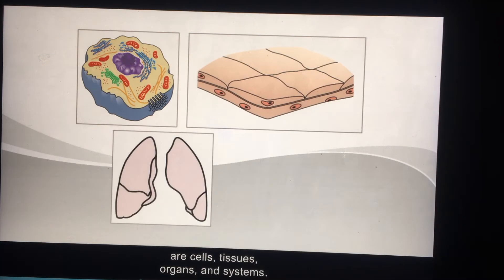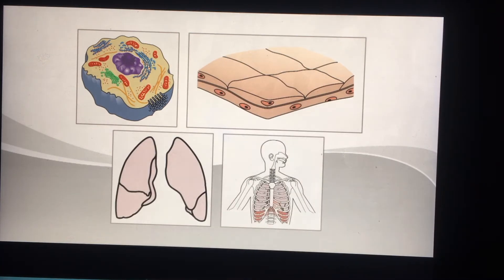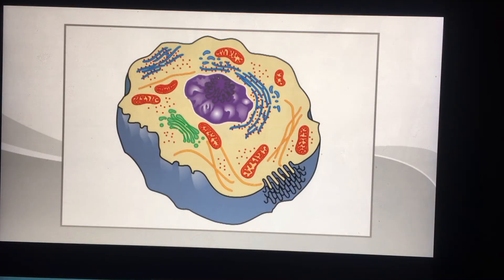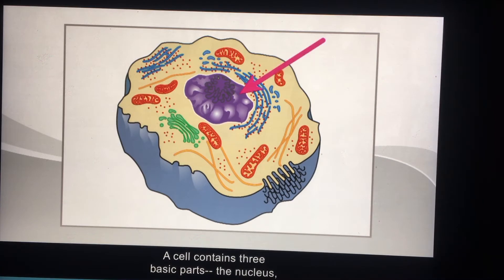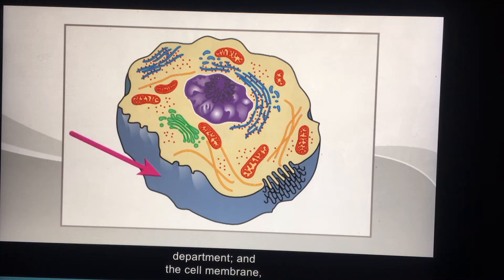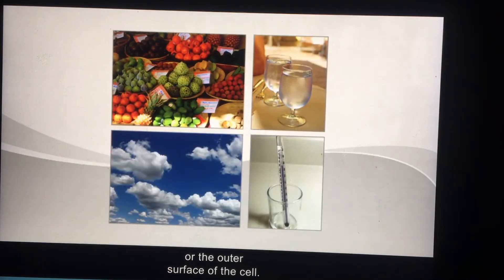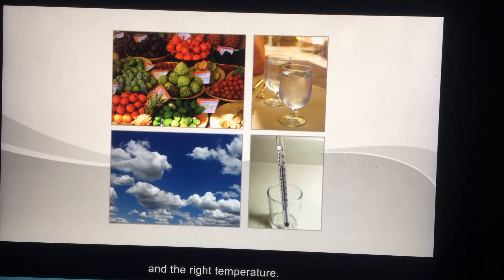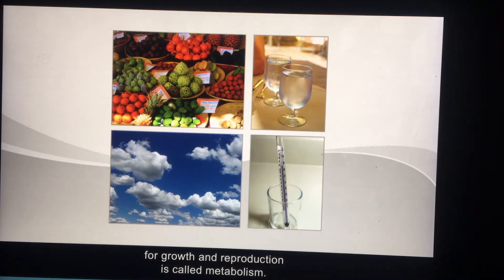A cell contains three basic parts: the nucleus, or the control center; the cytoplasm, or the production department; and the cell membrane, or the outer surface of the cell. To grow and keep healthy, cells need food, water, oxygen, and the right temperature.